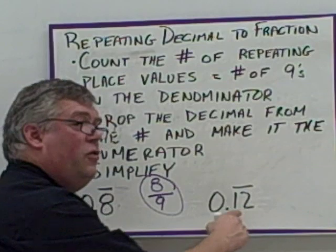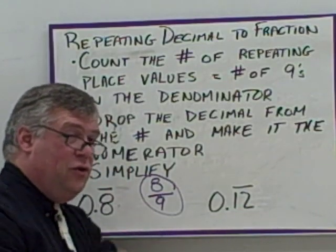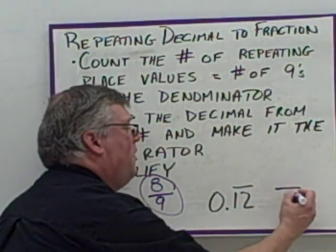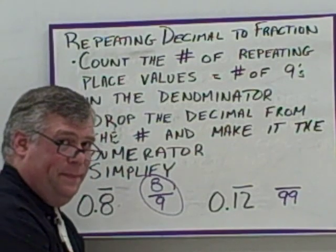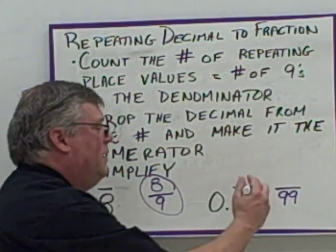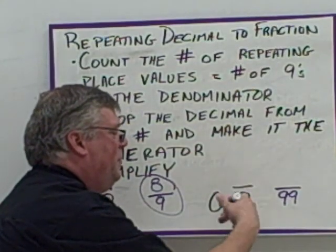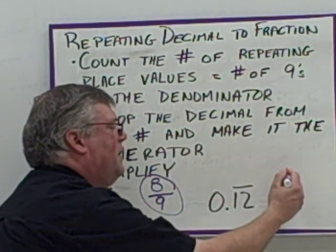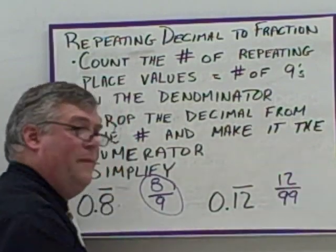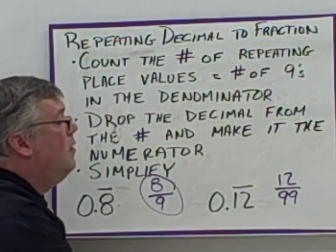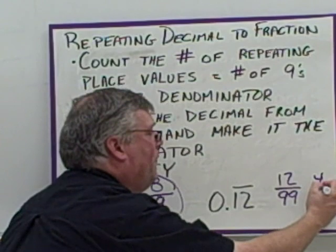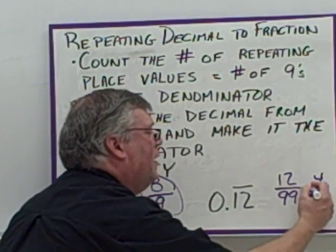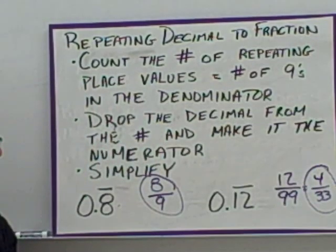Here we've got 0.12 repeating, so there are two place values repeating, which means the fraction has two nines on the bottom. On top, I have 12 — the number without the repeating bar or decimal. Both 12 and 99 are divisible by three, so I get 4 over 33 when I reduce it. That's my final answer.